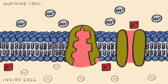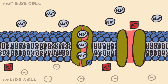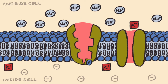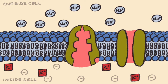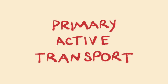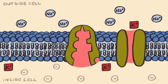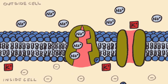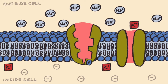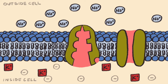Sodium-potassium ATPase pumps use energy from breaking ATP phosphate bonds to move three sodium ions out of the neuron into the extracellular fluid, while moving two potassium ions into the neuron. This is a prime example of primary active transport, in which energy is used to move ions against their electrochemical gradient. Although there is already a lot of sodium ions outside the neuron, sodium gets pumped there anyways. Although there are already a lot of potassium ions inside the neuron, potassium gets pumped there anyways.